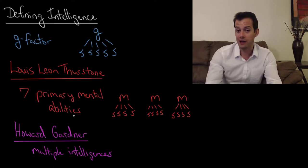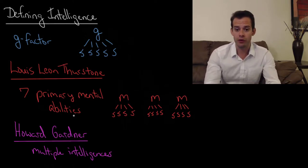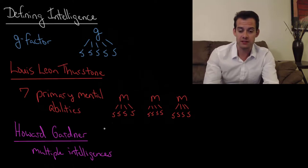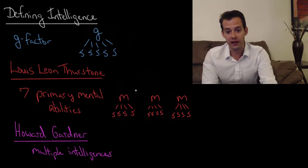This might look like a more reasonable organization when it comes to thinking about intelligence, and part of that is because we recognize that people do have different strengths. They might be better with numbers than with verbal comprehension. The problem that we run into though is if we look at these groupings, these primary mental abilities, and look for patterns amongst these, it turns out we still find evidence for G.